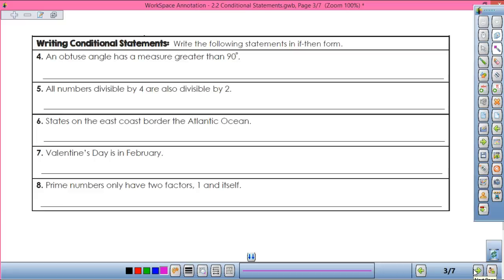Alright. So sometimes they're just going to give you a statement and you have to make it into if-then form. Sometimes you have to add some words in there. So number four says an angle has a measure greater than 90 degrees. Give me an if-then statement. I would write it as if an angle is obtuse, then it has a measure greater than 90 degrees.